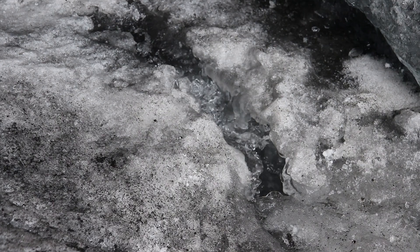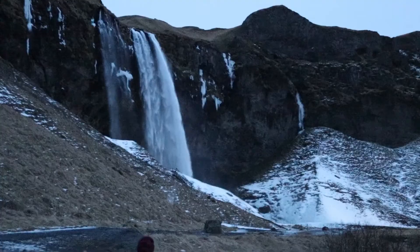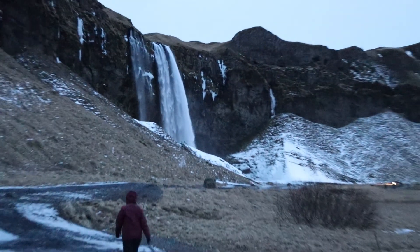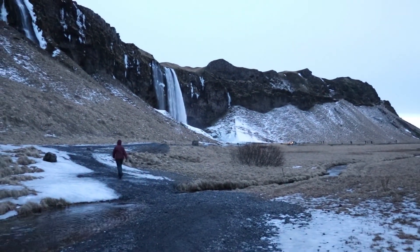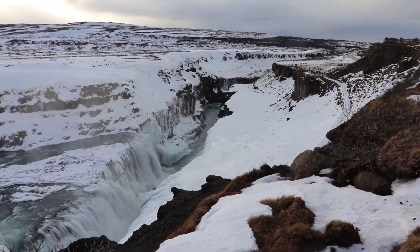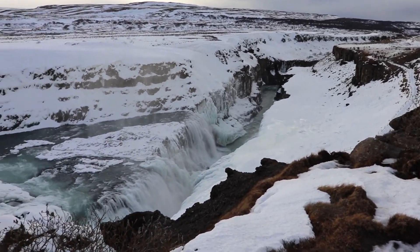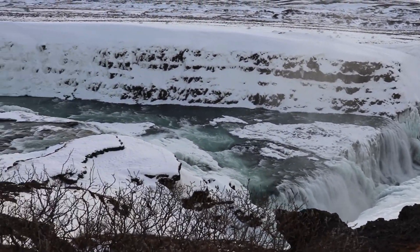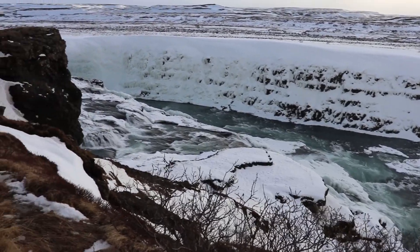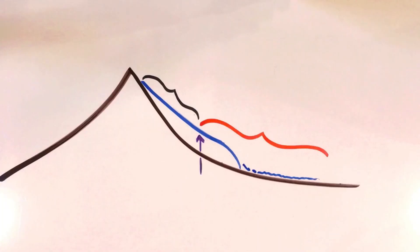Glaciers are melting all around the globe, and so the water they store is being lost. This is generally bad for communities who rely upon glaciers for drinking water. That's one of the reasons why it's important to try to reduce our carbon footprint. The less carbon dioxide we produce, the less the climate warms, and the better off glaciers are, as well as the communities that rely on them.